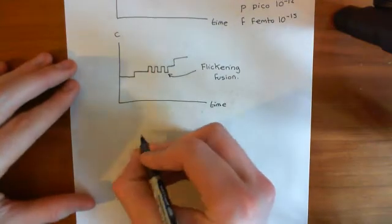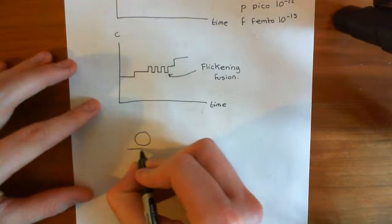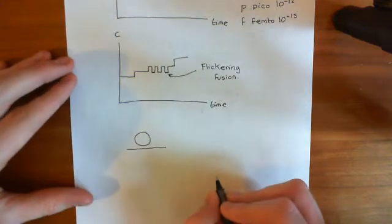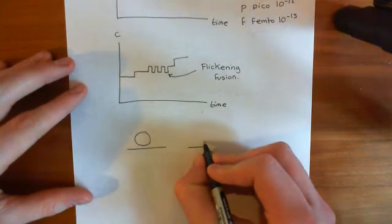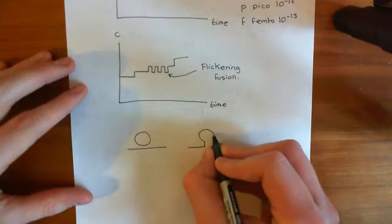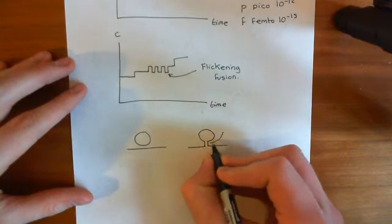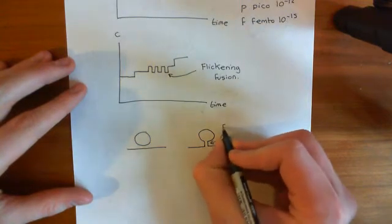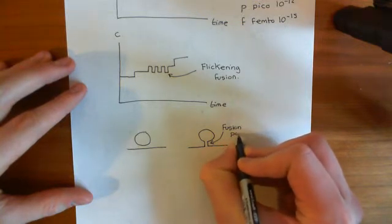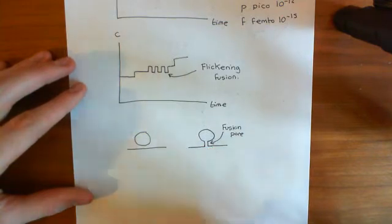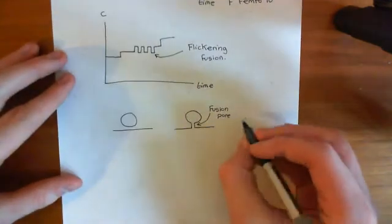So basically, when you have a vesicle docked at the plasma membrane, what can happen is that it can initially form this little narrow connection with the plasma membrane, which is known as a fusion pore. So it initially fuses a little bit. It forms this so-called fusion pore, which is this little cylindrical connection between the synaptic vesicle and the plasma membrane. And that's known as a fusion pore.